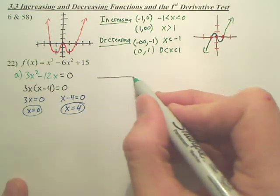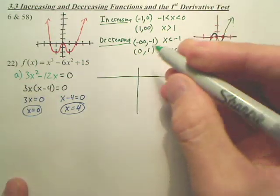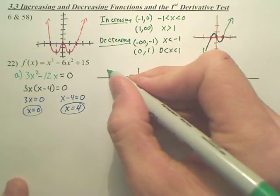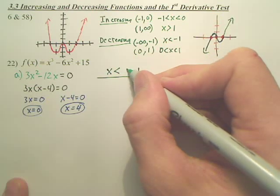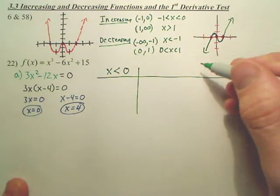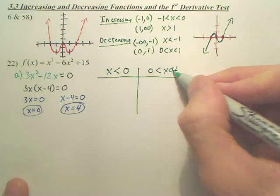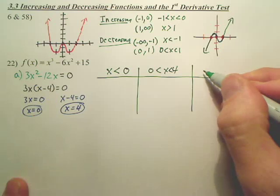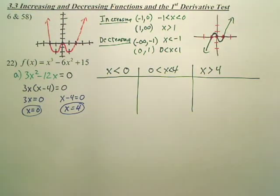So we're going to separate intervals according to these right here. So I'm just going to make a little table. My first part is x is less than 0. My second part is going to go from 0 to 4. And my third part is going to be x is greater than 4.